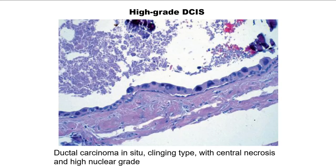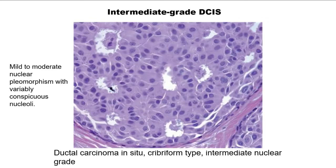Here is another example of high-grade DCIS — the clinging type — where you have essentially a single layer of malignant-appearing cells, with some central necrosis in this case. Here is an example of intermediate-grade DCIS showing mild to moderate nuclear pleomorphism and variably conspicuous nucleoli.